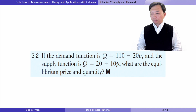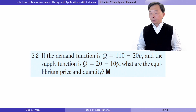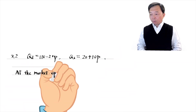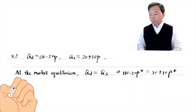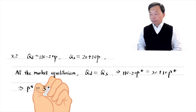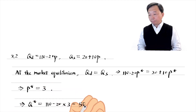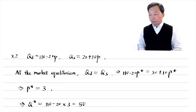Let's solve exercise 3.2. If the demand function is Q = 110 − 20P, and the supply function is Q = 20 + 10P, what are the equilibrium price and quantity? The demand function shows the relationship between the quantity demanded and the price. The supply function shows the relationship between the quantity supplied and the price. At the market equilibrium, the quantity demanded equals the quantity supplied. We can solve for the equilibrium price, which is 3. Then we determine the equilibrium quantity by substituting this equilibrium price into either the supply or the demand function. The equilibrium quantity is 50.